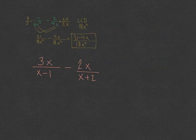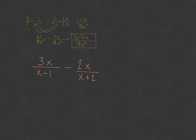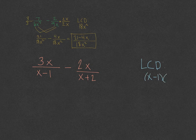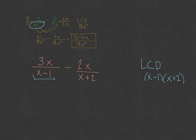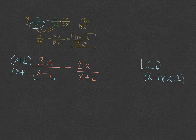Let's take a look at one more. I have 3x over x minus 1, all subtracting 2x over x plus 2, and I want to find the subtraction of these two fractions. The first thing we need to do is find the LCD. I have a factor of x minus 1 and a factor of x plus 2, so the LCD is x minus 1 times x plus 2. It's actually easier to find the LCD when you have whole factors like this. We take the left side and multiply it by what the denominator doesn't have — that would be x plus 2. We take the right side and multiply by what the denominator doesn't have — that would be x minus 1.